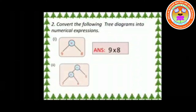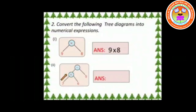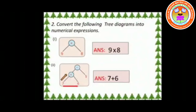For this kind of problem, we want to start from the branches. Second one and Third one: the symbol plus has leaves 7 and 6, so we can write it as 7 + 6. Here the symbol of the node is minus, thus the answer is 7 + 6 − 5.